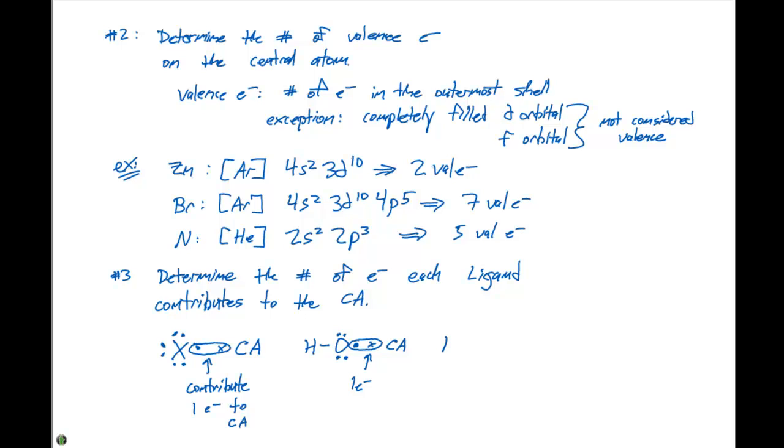A hydrogen is a fairly obvious example. It only has one electron, so it's going to contribute that one electron when it forms a covalent bond with our central atom.